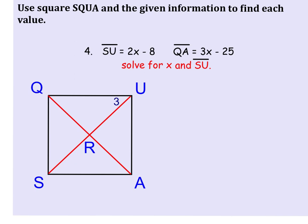If we look at this picture, SU is a diagonal and QA is a diagonal. And because we just learned that squares share the properties of rhombi and rectangles, and because we know a property of a rectangle is that the diagonals are congruent, we can set up 2x minus 8 has to be equal to 3x minus 25.